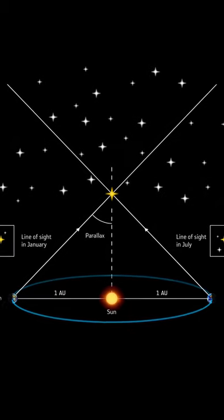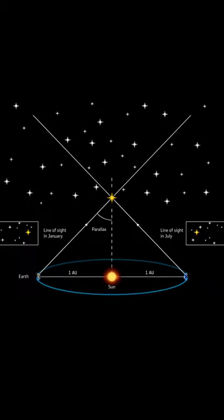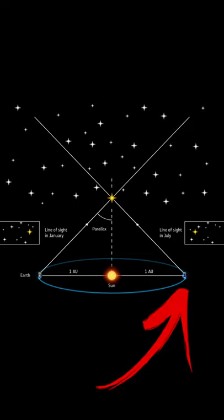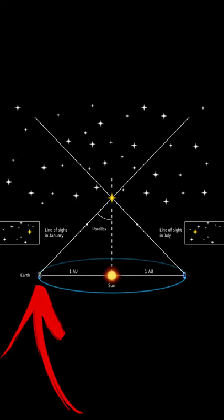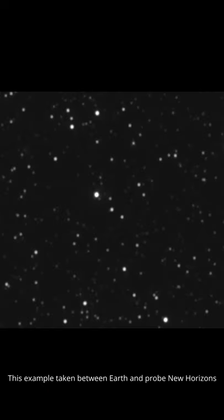We look at the star position compared to other more distant stars when the Earth is on one side of the Sun, and six months later when it is on the other side of the Sun. The star will look like it has moved, as in this example.